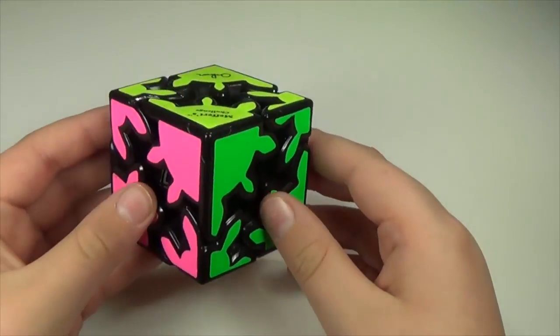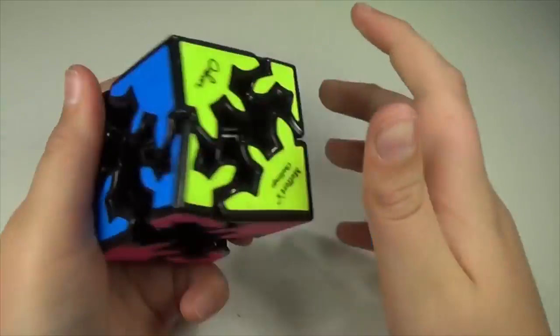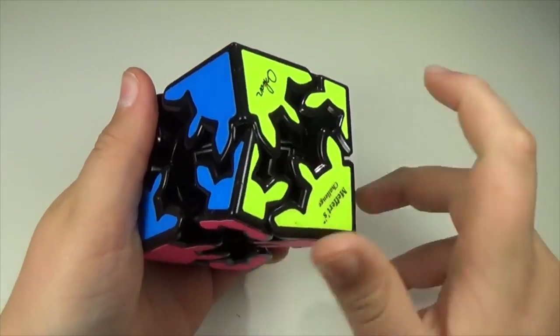Next, we have the Gear Shift. This cube turns very well, as you can see. The axes split apart like this, and then you can turn the individual faces.